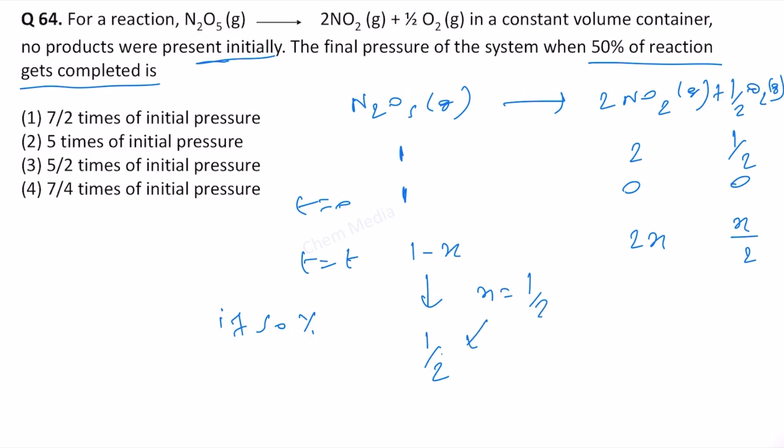So if x is 1/2, then what will happen here? Here it will be simply 1 and this will be 1/4. So when it is 50 percent complete, that's the ratio we will have.